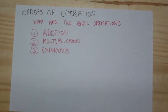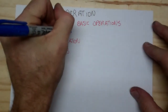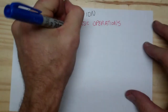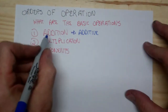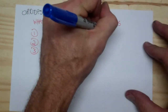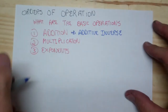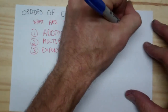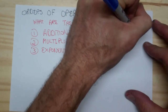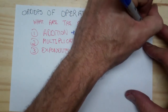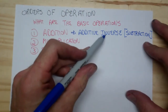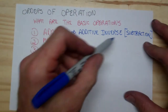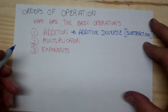And you're like, Professor G, you're missing three of them — and I'm not. Addition has the additive inverse, which is a notation, and that notation is subtraction. So what we're doing in subtraction is we're actually adding the inverse — we change the sign and we add. That's really what's going on with subtraction; subtraction is a notation.